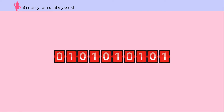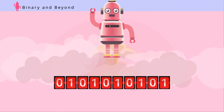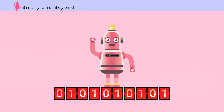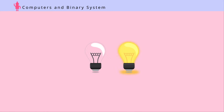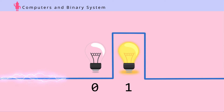Zero and one. Can you imagine a world where only two digits are available? This is the world of computers. Binary computers run on the binary number system, in which two digits — zeros and ones — are used to represent data. Why two, not ten?